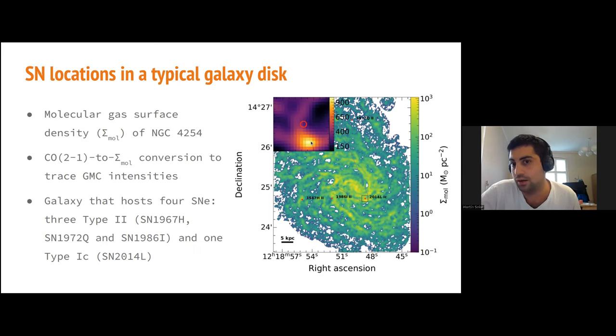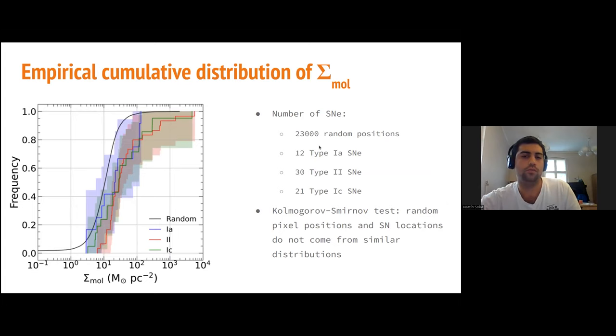Repeating the process for the whole sample—23,000 random positions, 12 Type Ia, 30 Type II, and 21 Type Ic—the plot shows the empirical cumulative distribution. There's a clear shift of random positions, the median of the galaxy sample, in comparison with the supernova environment. When the Kolmogorov-Smirnov test was computed, the random pixel positions and supernova locations do not come from similar distributions.